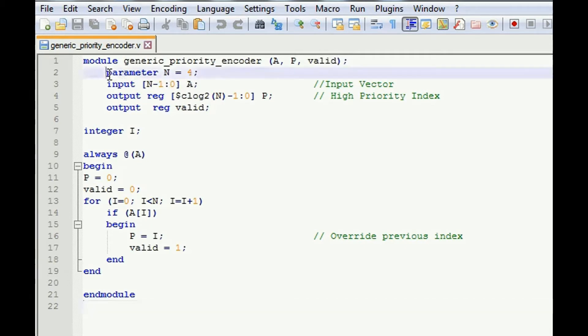It has A as an input, P is the output along with the valid signal. Now as this is the generic priority encoder, I am considering n as a parameter. So n is 4. Input A will be n minus 1 down to 0.